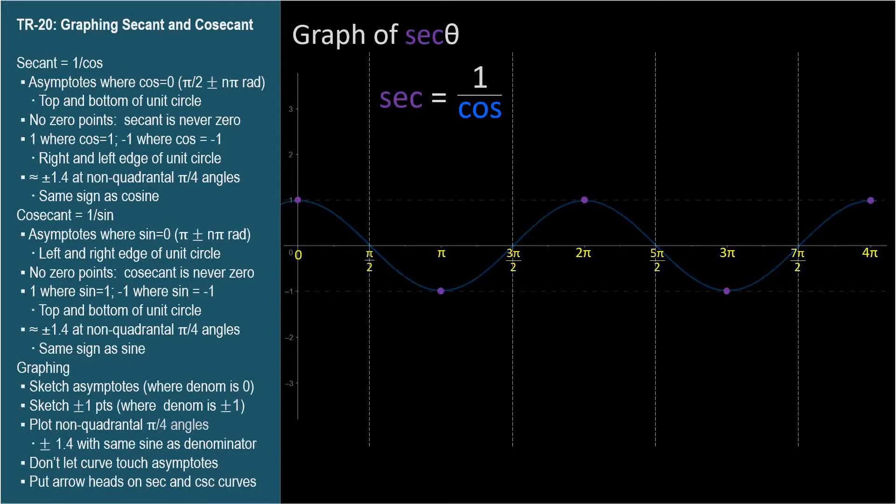So secant touches the cosine graph at its peaks and valleys. I chose purple as the memory aid color for secant, because cosine is blue. Cosine and secant are reciprocals, and purple seems like a special kind of blue, maybe. The memory aid color for cosecant is pink, because of its reciprocal relationship to the red sine function, and pink seems like a special kind of red.